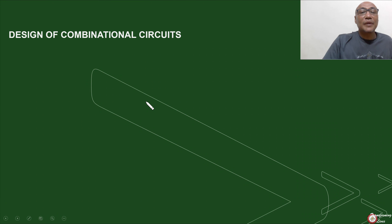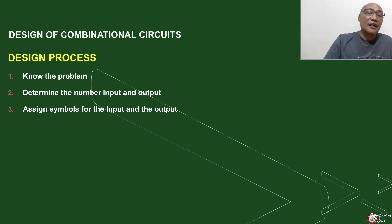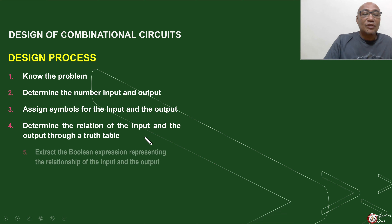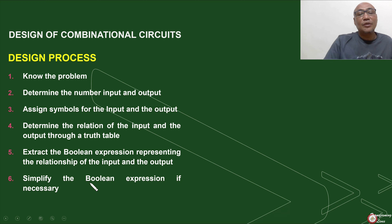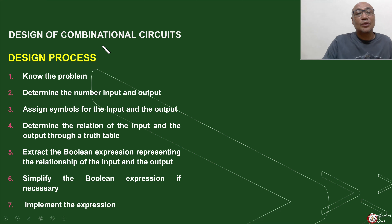So in the design of combinational circuits, remember this simple rule: number one, know your problem — without understanding your problem, there is no way you can proceed with the design. After which, determine the number of inputs and outputs. Third, assign symbols for the input and the output. With that, you can easily do your truth table to determine the relationship of your input and output. From your truth table, you extract your Boolean expression. You may need to simplify the Boolean expression. And the last step is to implement the expression. We'll be solving more problems to become more familiarized with our design process. Thank you for staying with me — do watch my other videos that pertain to the design of combinational circuits.